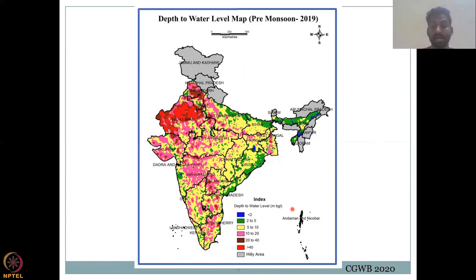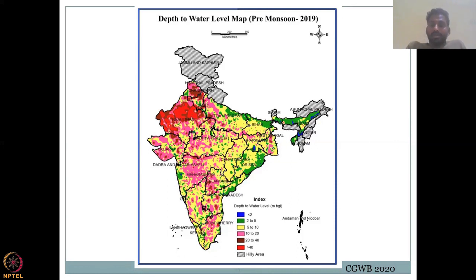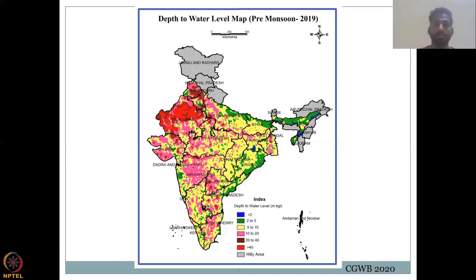Most of the regions are converting into the pink color, thereby showing that there is more critical and semi-critical use of groundwater, and in most regions it is overexploited. Rajasthan is not as bad as it was earlier in terms of groundwater depletion, though there is still a lot of red color. A lot of depth must be covered to access the water levels.